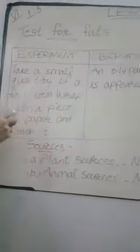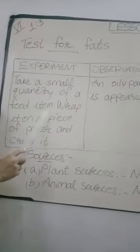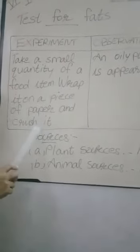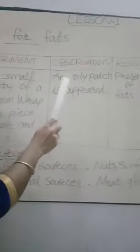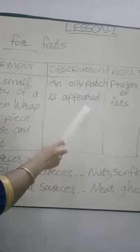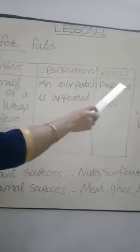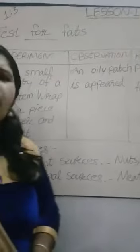Take a small quantity of a food item, wrap it on a piece of paper, and crush it. Observation: an oily patch appeared. Result: presence of fats.